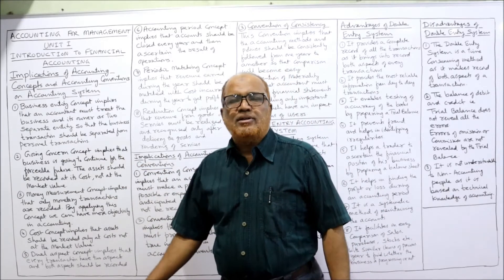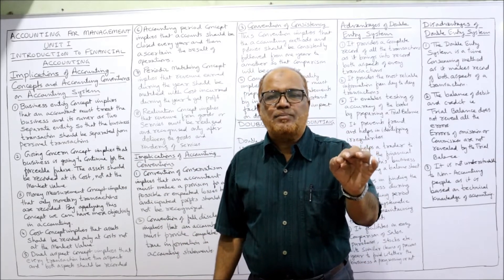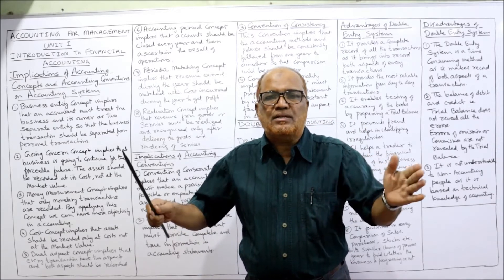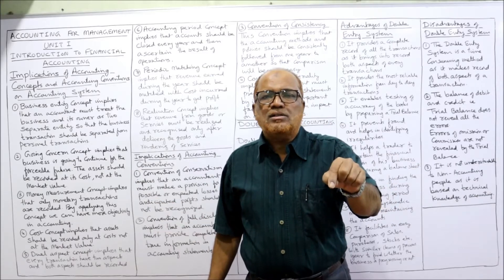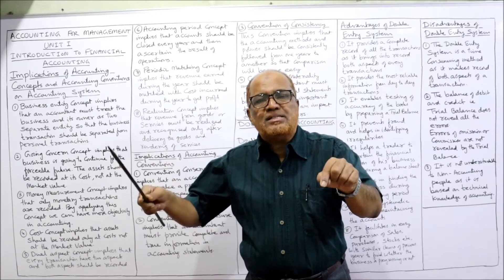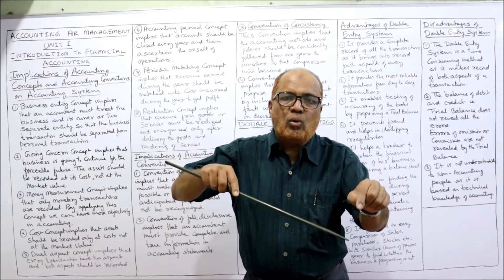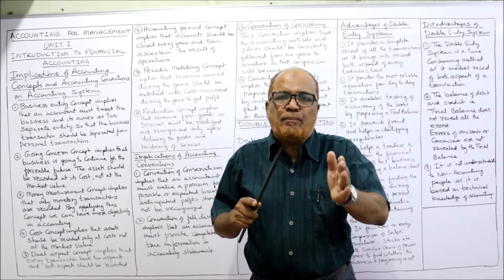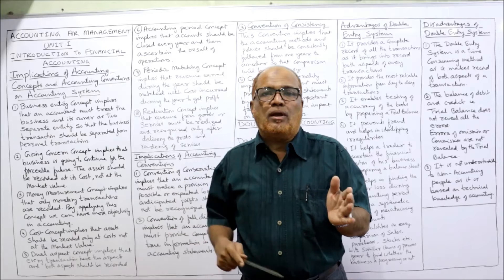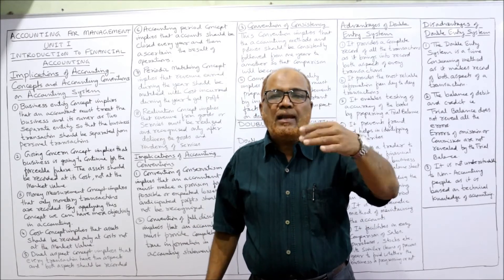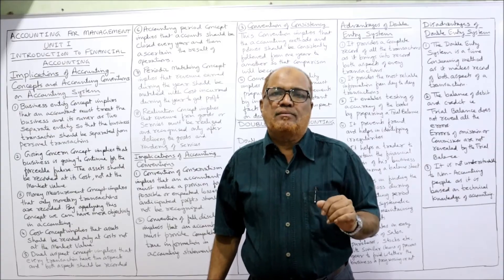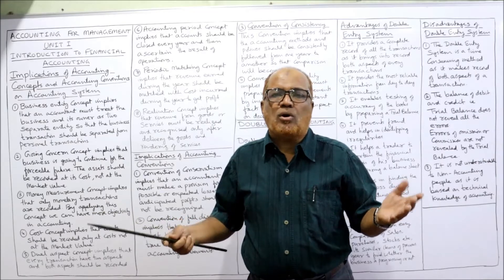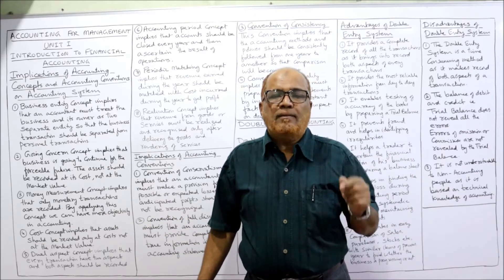The first is the business entity concept. According to this concept, accounting treats the owner and the business as two separate entities. If we follow this concept, the owner's personal transactions will not be included in the business transactions, so business transactions will be completely separated from the personal transactions of the owner. In this way, we can evaluate the performance of the business; otherwise, all transactions will be mixed up.